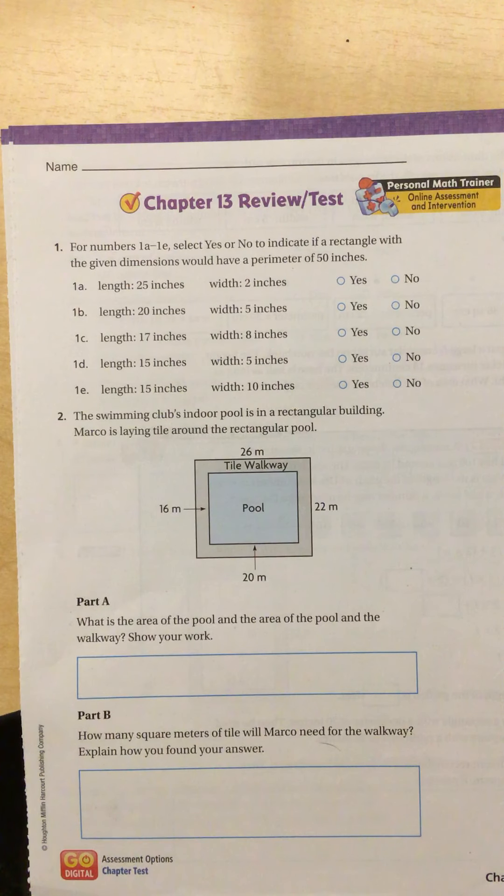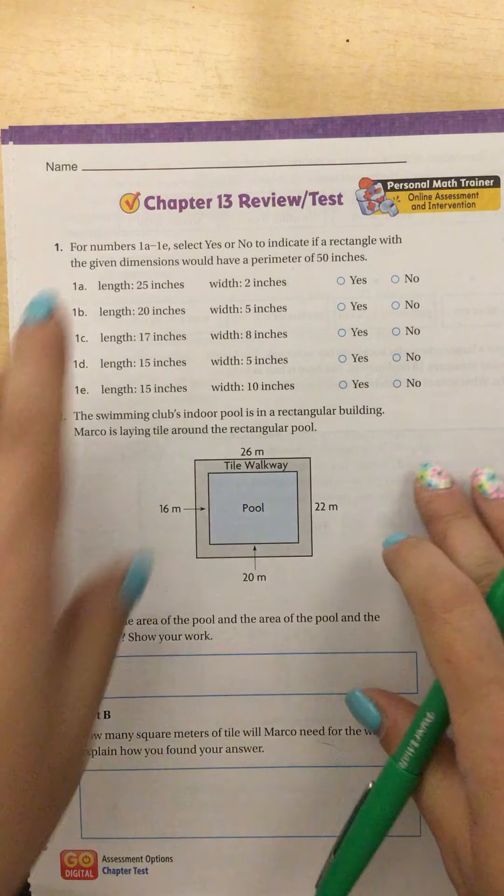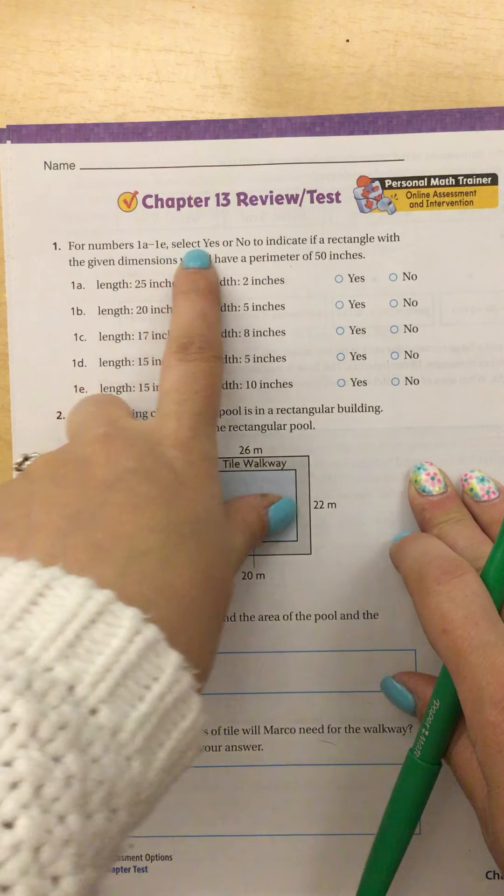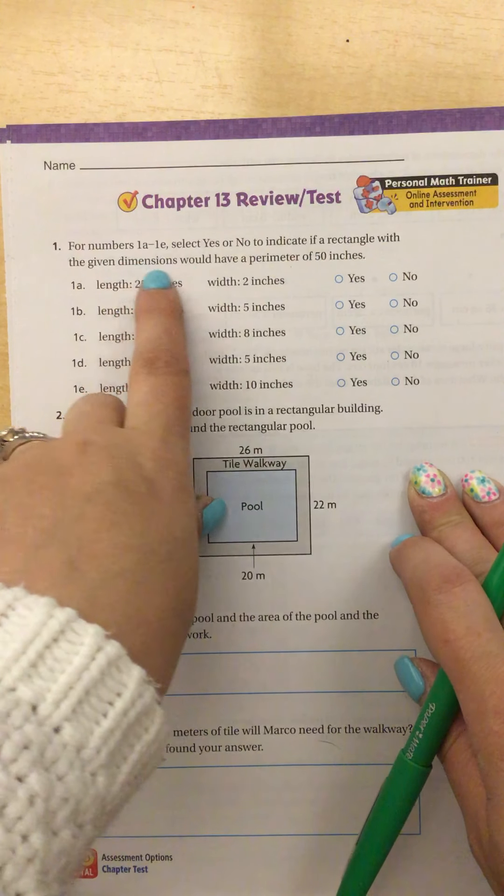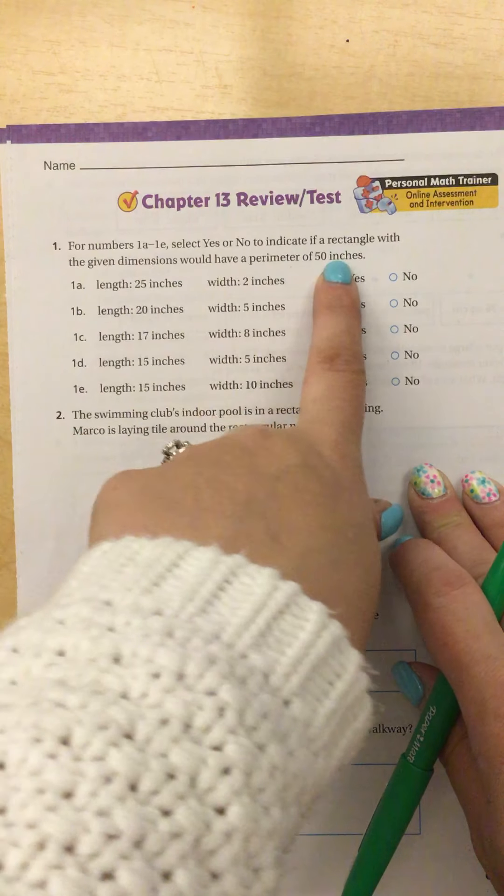This is the chapter 13 test review for fourth grade. For numbers 1A through 1E, select yes or no to indicate if a rectangle with the given dimensions would have a perimeter of 50.